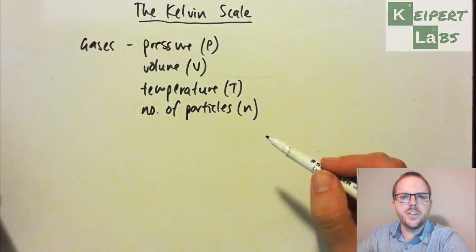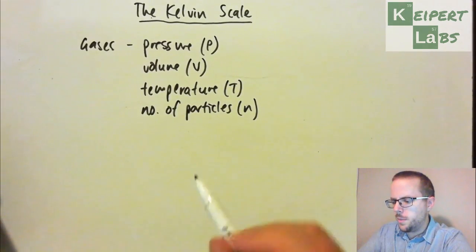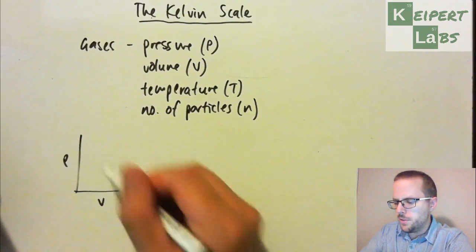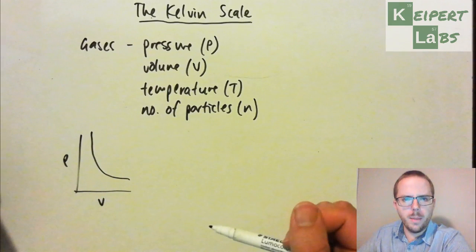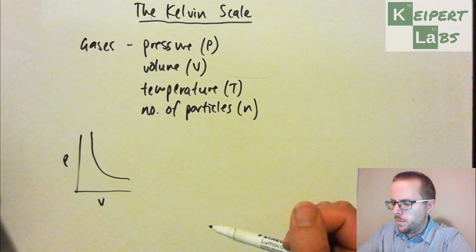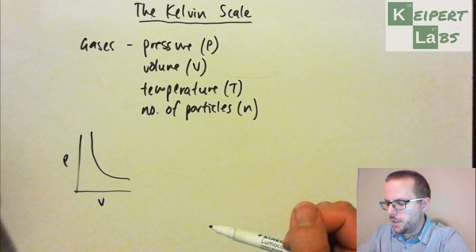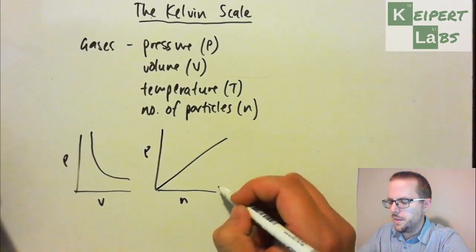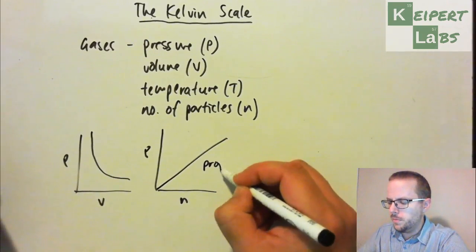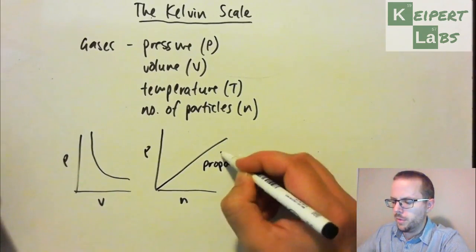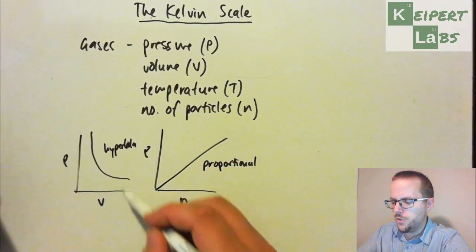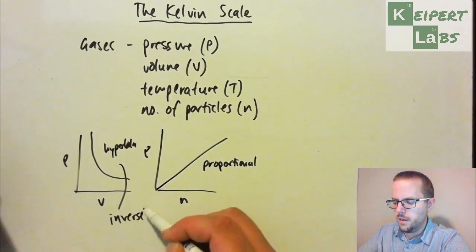So we were looking at some of the relationships that exist between these properties. When we created a graph of volume versus pressure, we saw this sort of relationship, what we call a hyperbola. With pressure versus the number of particles, we saw a proportional or directly proportional relationship.